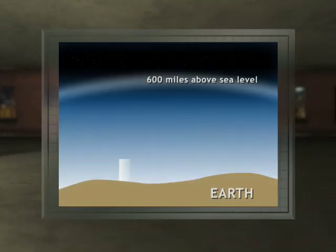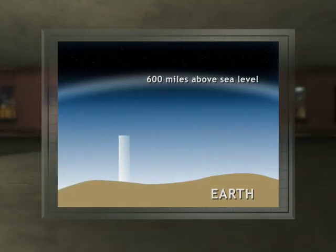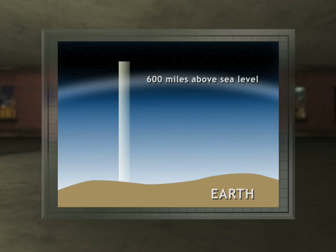Picture a clear plastic tube going from a spot on Earth to 600 miles above sea level. That is where the atmosphere ends. In other words, there is no more stuff. Now, let's fill the tube with eggs.